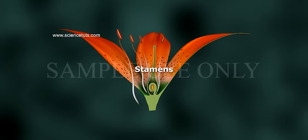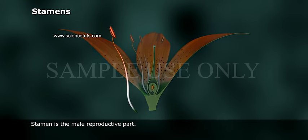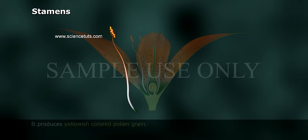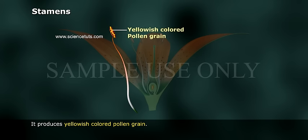Stamens. The stamen is the male reproductive part. It produces yellowish-colored pollen grains.